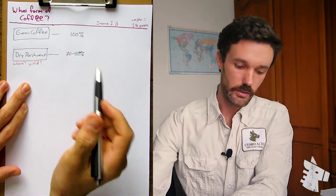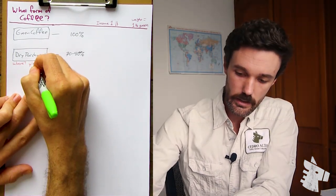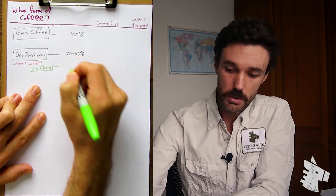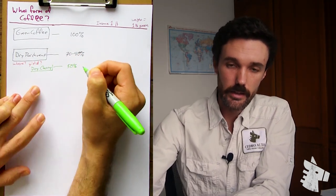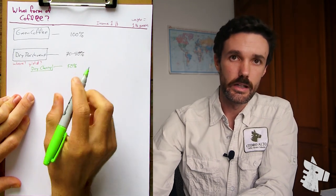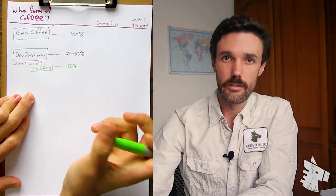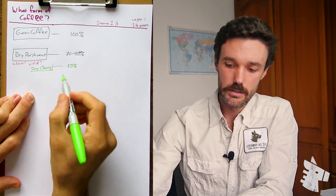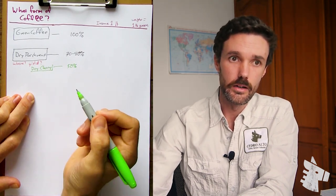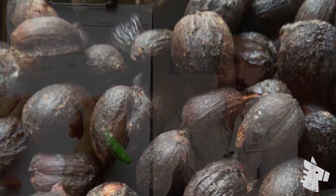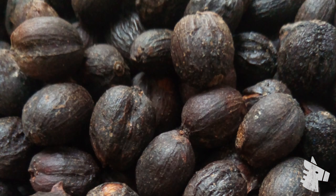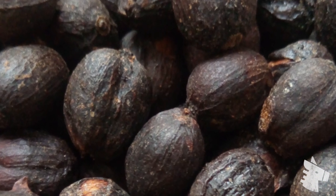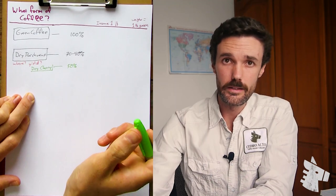We also have dry cherry if this is natural processed coffee, and this could be about 50 percent. Because when the cherry is dried without having depulped, all that fruit pulp and cherry skin remains part of the product that's being sold and that has a weight. So when we're milling a natural processed coffee, the weight loss is going to be much greater because of the cherry skins and dried fruit pulp that's connected when it begins the milling process.